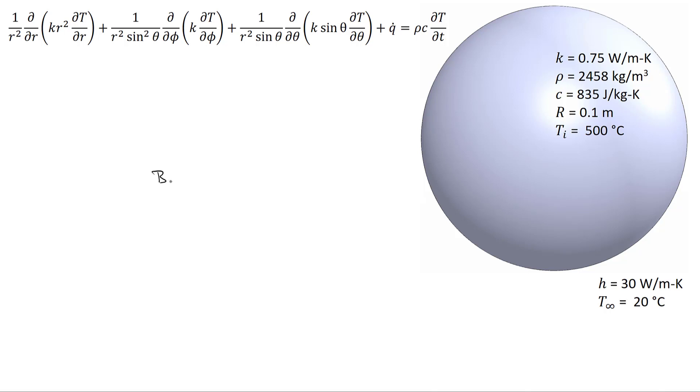The first thing we're going to do is calculate the Biot number, which is equal to H times the radius divided by the thermal conductivity, and we get a value in this instance of 4. That should immediately suggest to you that lumped capacitance is completely inappropriate for this problem, because the exterior of the sphere is going to cool down more rapidly than the interior.